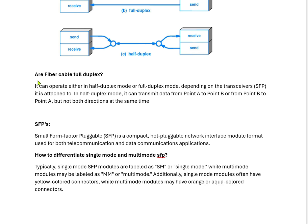Are fiber cables full duplex? They can operate in either half duplex mode or full duplex mode depending on the transceivers or SFPs, which we will discuss in the later part of the video. In half duplex mode, it can transmit data from point A to point B — source to destination or destination to source — but not both directions at the same time.